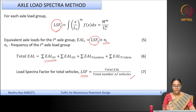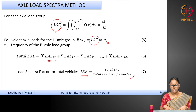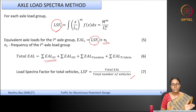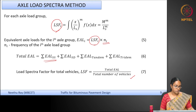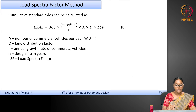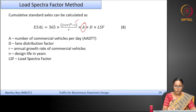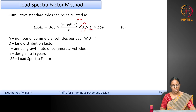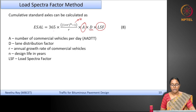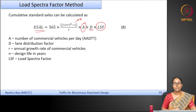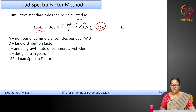This is identical to the vehicle damage factor approach — you determine one factor for the entire vehicle class, called the load spectra factor. The advantage is that rather than categorizing into different load bins, the entire spectra and its variation over different load ranges is taken as-is. The cumulative standard axles are computed as: initial traffic A × 365 × [(1+r)^n − 1]/r × lane distribution factor D × load spectra factor, giving the design traffic or equivalent standard axle load.